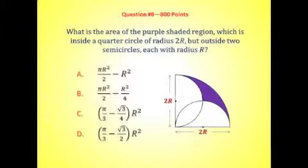Is it pi r squared over 2 minus r squared? Pi r squared over 2 minus r squared over 4? Pi over 3 minus the square root of 3 over 4, that quantity times r squared? Or pi over 3 minus the square root of 3 over 2, that quantity times r squared?